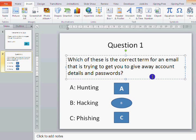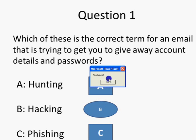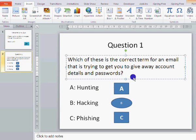Let's test it — Shift and F5. Here is my question. The correct answer is phishing. I click on it — 'Well done'. I can click OK and that's that. So that's your first piece of Visual Basic.